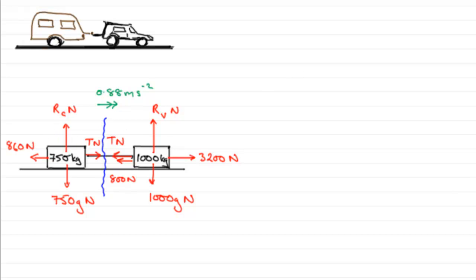If we look at the caravan, let's just say consider the caravan. What we're going to do is resolve to the right in the direction of motion. So if we resolve to the right, we're looking at that resultant force to the right acting on the caravan, and that equals the mass times the acceleration.